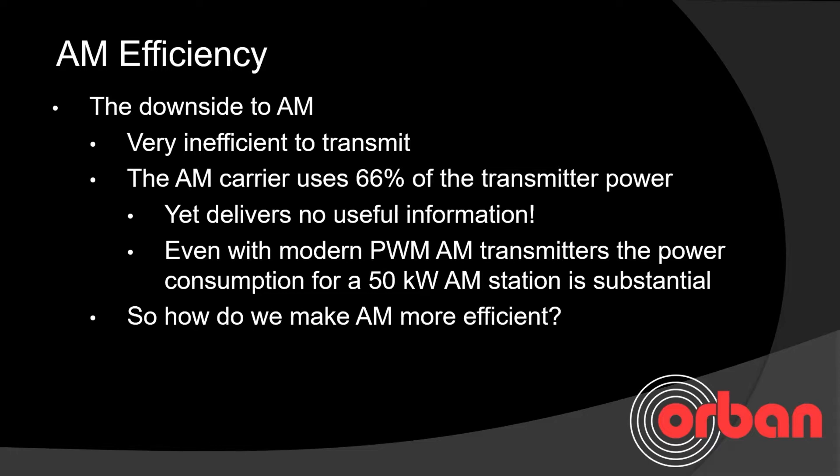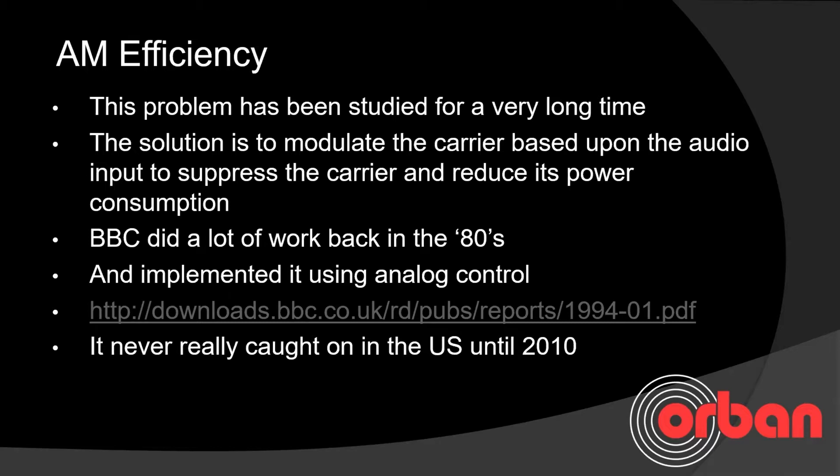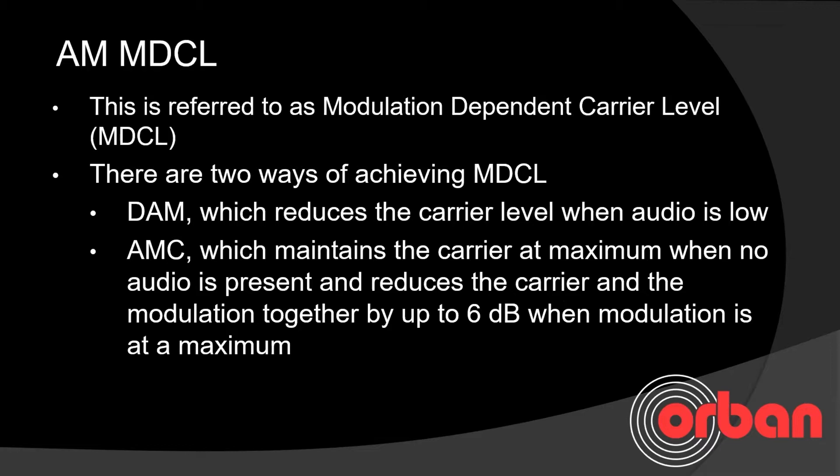So how do we make AM more efficient? This problem has been studied for a very long time. The solution is to modulate the carrier based upon the audio input to suppress the carrier and reduce its power consumption. The BBC did a lot of work back in the 80s on this and implemented it using analog control. It really never caught on in the US until 2010–2011.